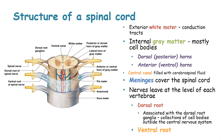Looking at the structure of the spinal cord, we have an exterior white matter that has conduction tracts, and the internal grey matter which is mostly composed of cell bodies. This grey matter has a dorsal horn, which is the posterior horn, and an anterior or ventral horn. In the central area, we have the central canal that is filled with cerebrospinal fluid, and the spinal cord is surrounded by the meninges which protect it.